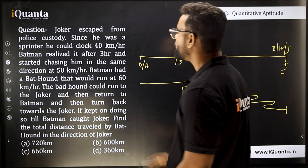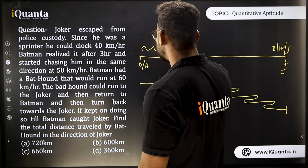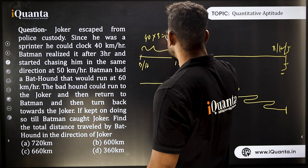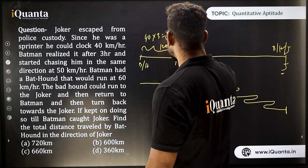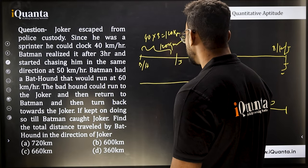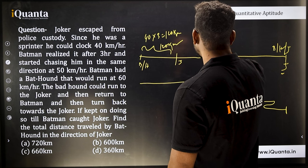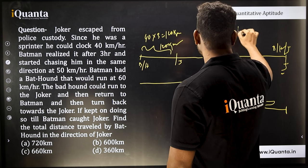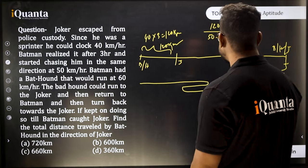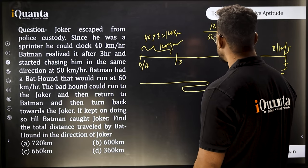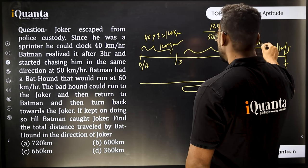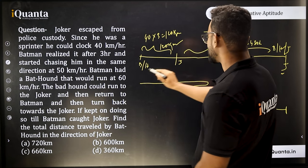The first step is to find when Batman will catch Joker. Batman was released 3 hours after Joker, so in those 3 hours Joker travels 40 × 3 = 120 km. This is the initial gap. The time for Batman to close this gap is 120 divided by the relative speed of Batman and Joker, which is 50 − 40 = 10, giving 12 hours. In 12 hours, Joker travels 12 × 40 = 480 km and Batman travels 12 × 50 = 600 km.